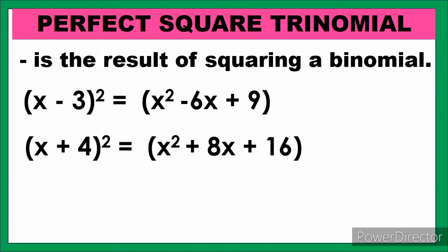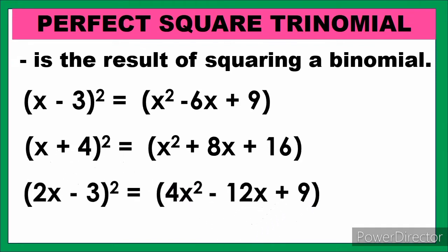Let us have number 2. We have the square of x plus 4, which equals x² plus 8x plus 16. That product is also a perfect square trinomial. Next, the square of 2x minus 3 gives the product 4x² minus 12x plus 9, and that is also a perfect square trinomial.